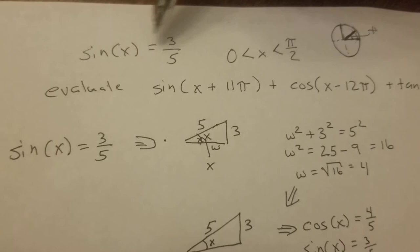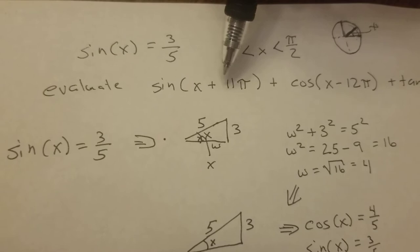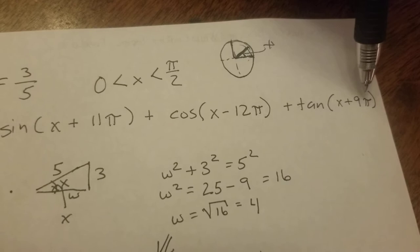They said evaluate, and this is what I couldn't read, so I may have got these numbers wrong, but the idea is right. They said evaluate sine of x plus 11 pi, plus cosine of x minus 12 pi, plus tangent of x plus 9 pi.